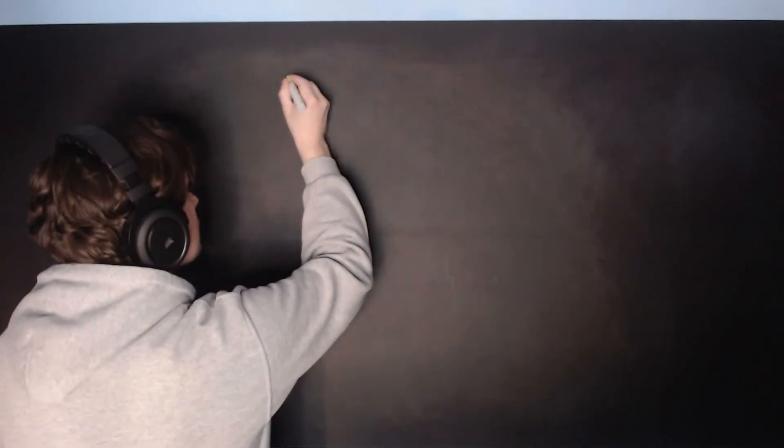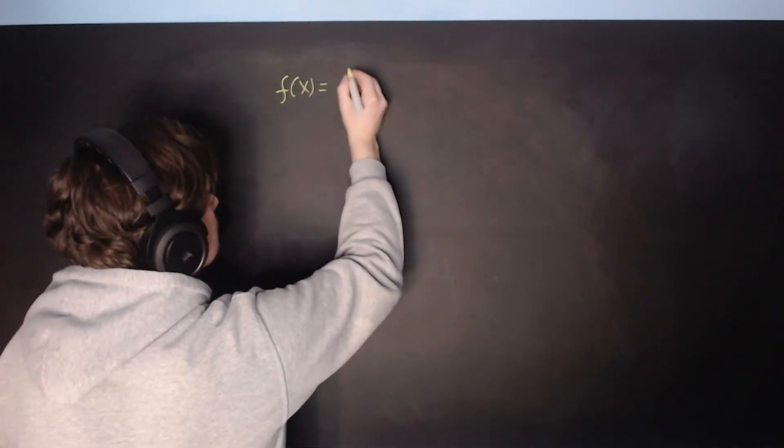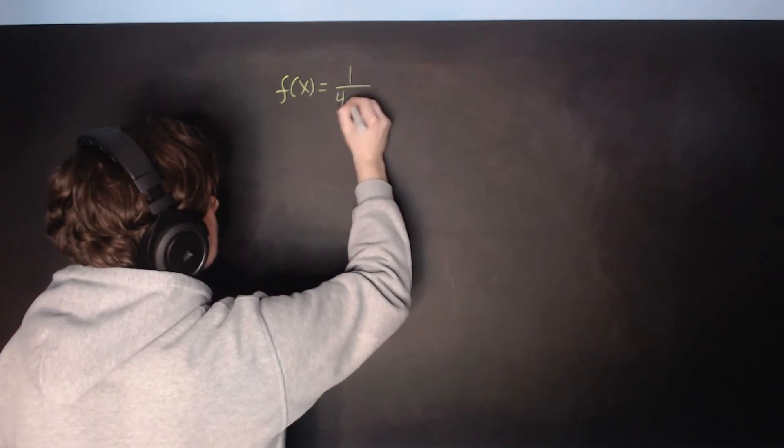Hi guys, in this one I'm going to show you how to find a power series for a function. Let's just choose one, so I'm going to say f of x is equal to 1 over 4 minus x.